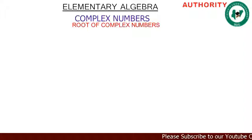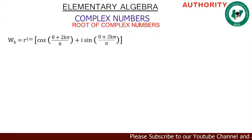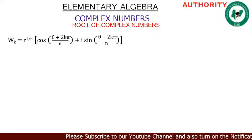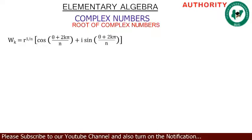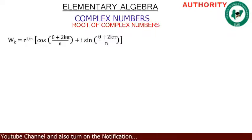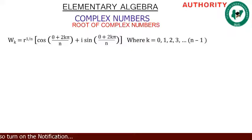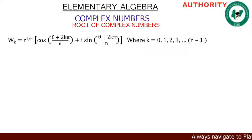The roots of complex numbers. The formula is: w_k = r^(1/n) [ cos((θ + 2kπ)/n) + i sin((θ + 2kπ)/n) ], where k = 0, 1, 2, 3, ... continuously till n minus 1. This is the formula for the root of complex numbers.